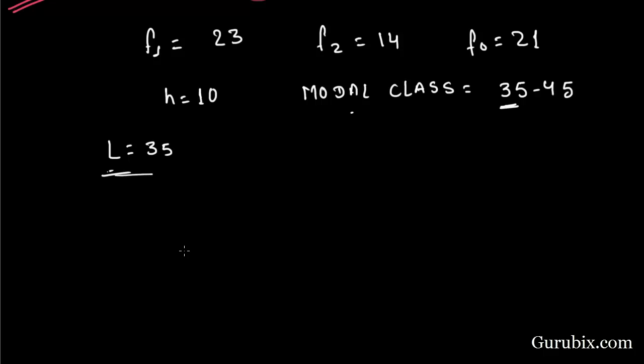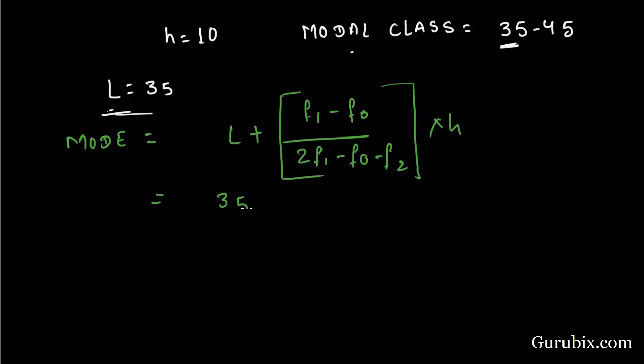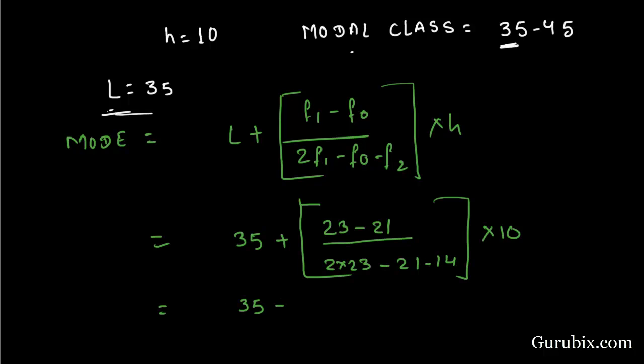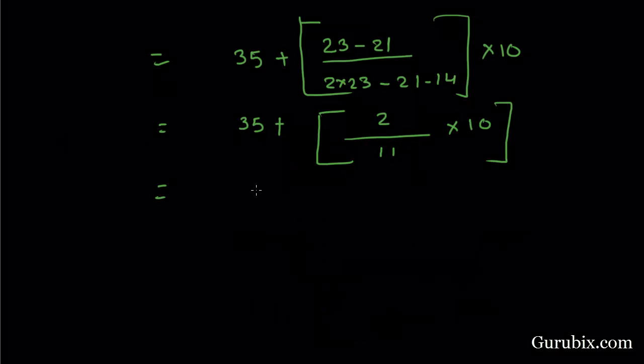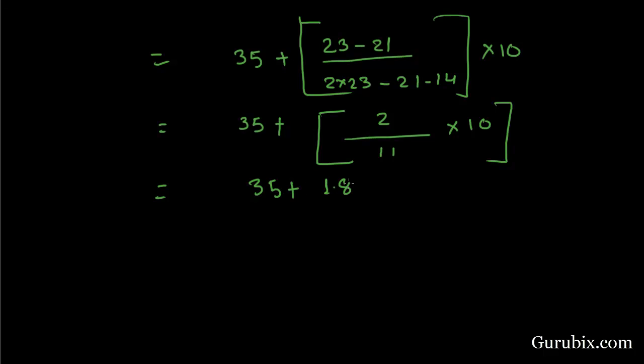Now, substitute this value into the formula of mode. We know that mode is equal to L plus (F1 minus F0) divided by (2F1 minus F0 minus F2) into H, which equals 35 plus (23 minus 21) divided by (2 times 23 minus 21 minus 14) into 10. So, 35 plus 2 upon 11 into 10 equals 35 plus 1.8 equals 36.8, and mode is equal to 36.8.